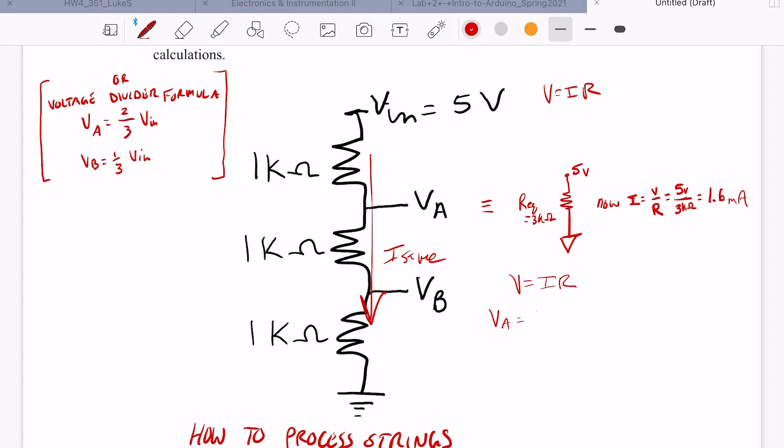So if we want to find Va, it'll be that 1.6 milliamp current that we just found, and that's going to be multiplied by, say Va, we're going to find it across this 2k resistance, and that will be 3.333 volts.